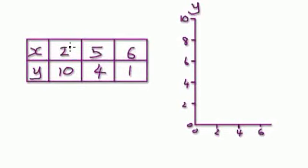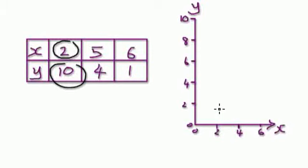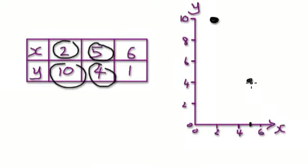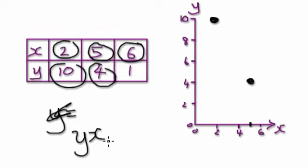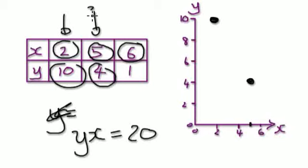Let me plot the graph. When X is 2, Y is 10 — that point is up here. When X is 5, Y is 4 — that point is around here. Earlier we found that YX equals 20 for both of those points, so if we rearrange, Y equals 20 over X, meaning K equals 20 for those two cases.